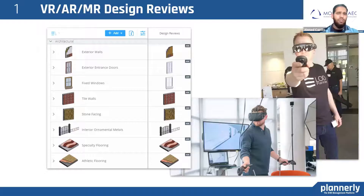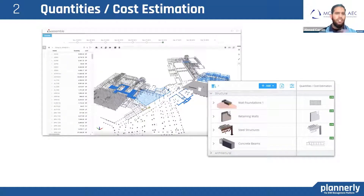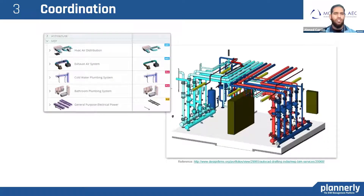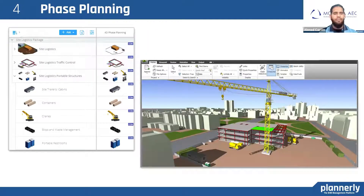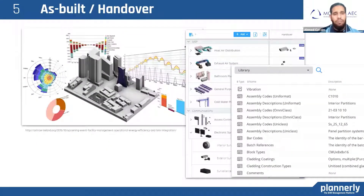There are many examples of what our models can be used for, ranging from design and quantities all the way to simulation. Here are five examples: design reviews using VR and AR; quantities or cost estimation, making sure elements are defined before taking off quantities; coordination for constructability issues or clash detection before going on site; phase planning, sequencing, and 4D simulations to virtually construct over time; and as-built handover models to visualize data and internet of things information.